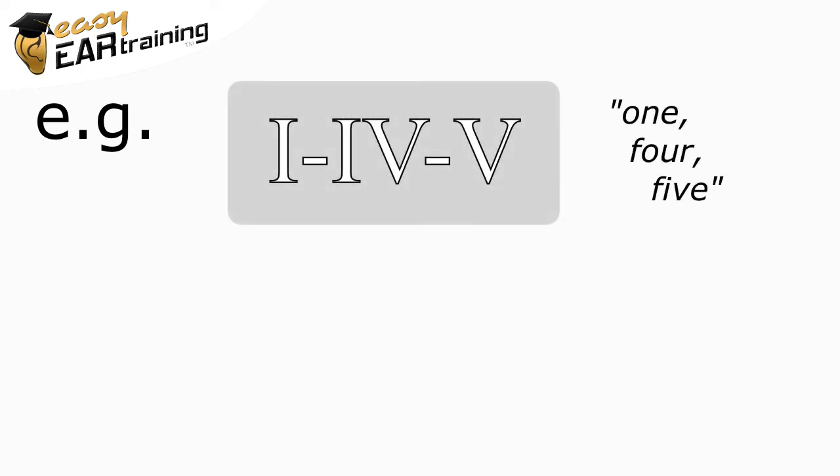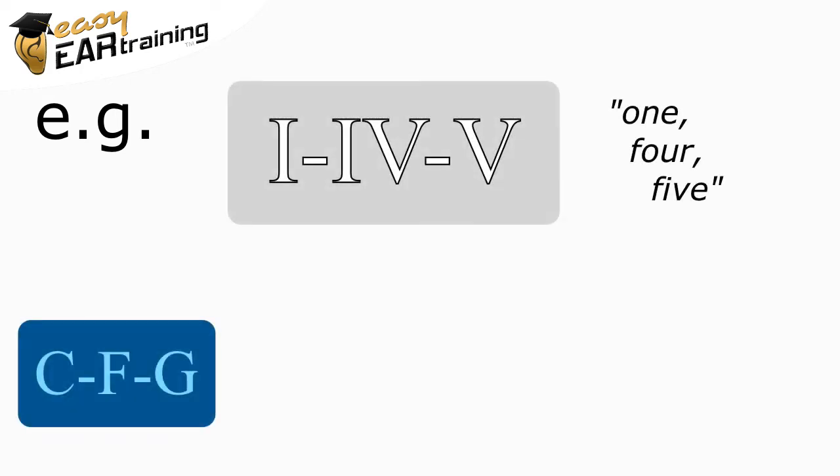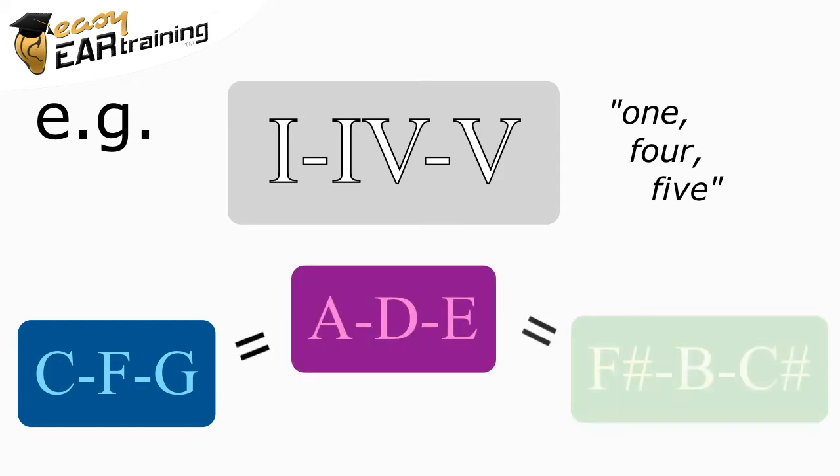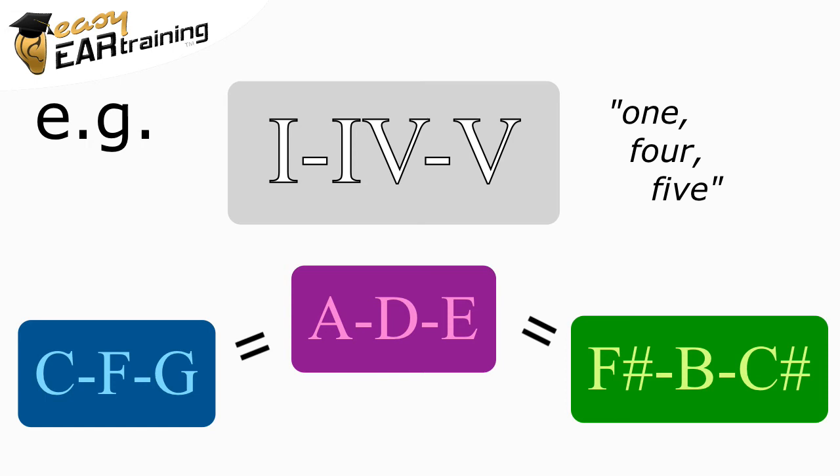For example, we talk about a 1-4-5 progression rather than a C-F-G progression, because playing the chords with these scale degrees will produce the same characteristic sound in any key.